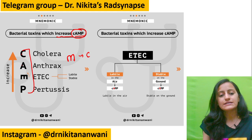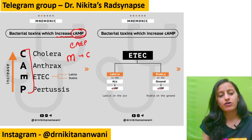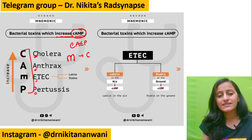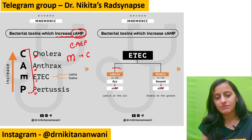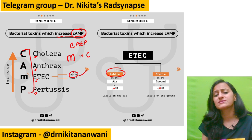So remember it's CA-E-P: C for Cholera, A for Anthrax, E for EtaC, and P for Pseudomonas — all produce cyclic AMP. In EtaC, remember it's the heat-labile toxin which is cyclic AMP increasing, not the stable one.